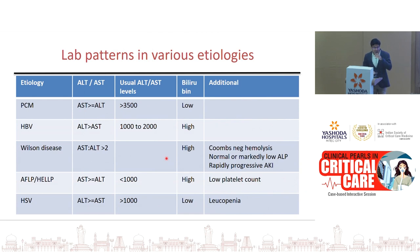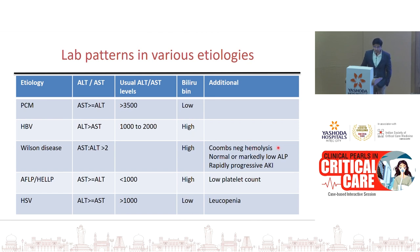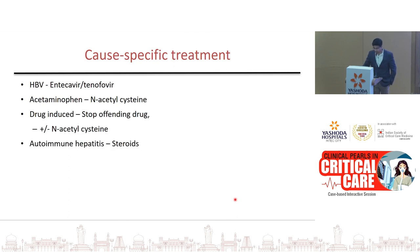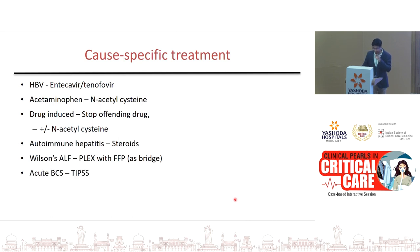Lab patterns as etiological clues: in paracetamol poisoning, enzymes are often more than 3000 and bilirubin is low. In Wilson's disease, AST to ALT ratio is more than 2, bilirubin is high, with Coombs-negative hemolysis, low ALP, and progressive AKI. In HSV, it's anicteric hepatitis — bilirubin is often low and enzymes are elevated with associated leukopenia. Cause-specific treatments: antivirals for hepatitis B, N-acetylcysteine for acetaminophen, steroids for autoimmune hepatitis, PFFP as bridge to transplant for Wilson's, TIPS for acute Budd-Chiari, and delivery for acute fatty liver of pregnancy.